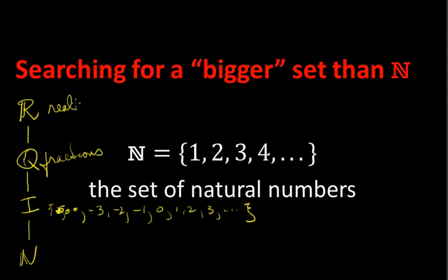We have already shown that even though the integers contain infinitely many numbers that are not in the natural numbers — all the negative numbers — they have the same cardinality. The set is really no bigger. And what we're going to do in this video is look at the set of all fractions, all rational numbers, and see if that set can be put into one-to-one correspondence with the set of natural numbers.